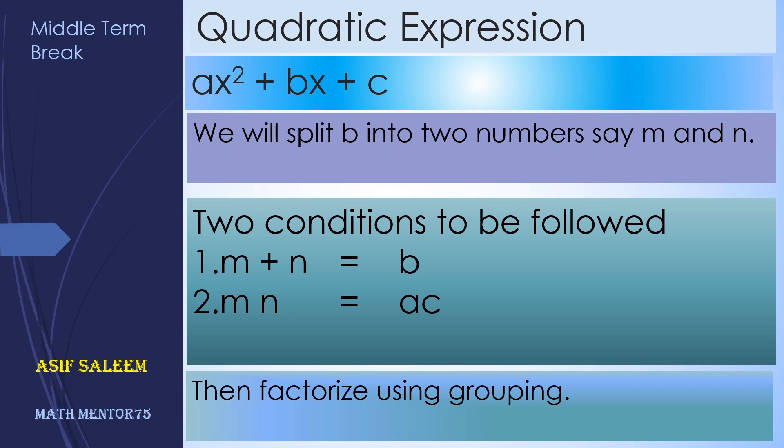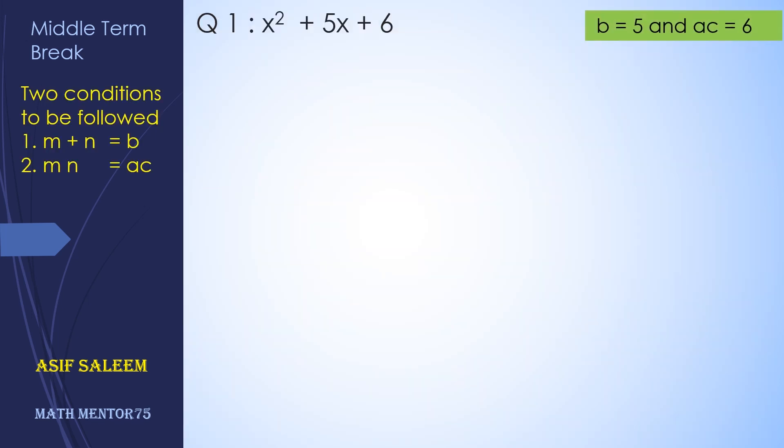So b is 5 and the product of ac is 6. Now the sum of the two numbers m + n should be 5, and the product should be 6, which is a positive number. This means that the two numbers which we want to add should have the same sign.